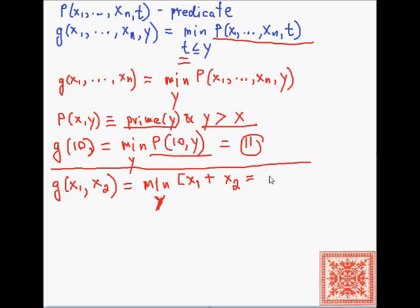So that function always returns, because for any x1, x2, they're natural numbers. They will sum up to some other natural number. So we will find that y. But things may not always work out as nicely.